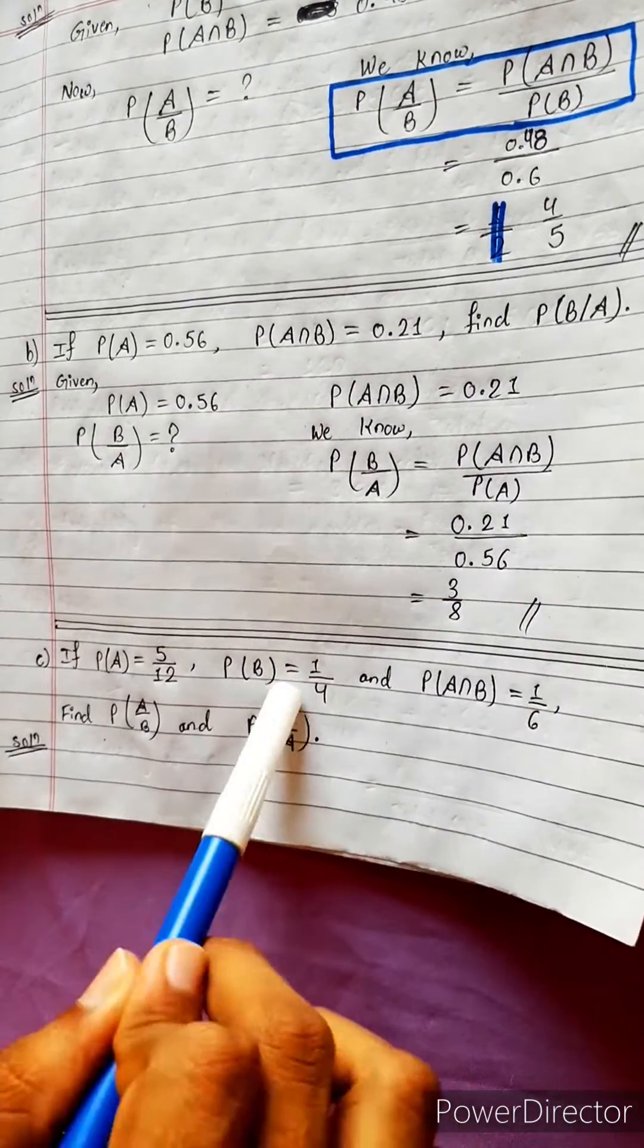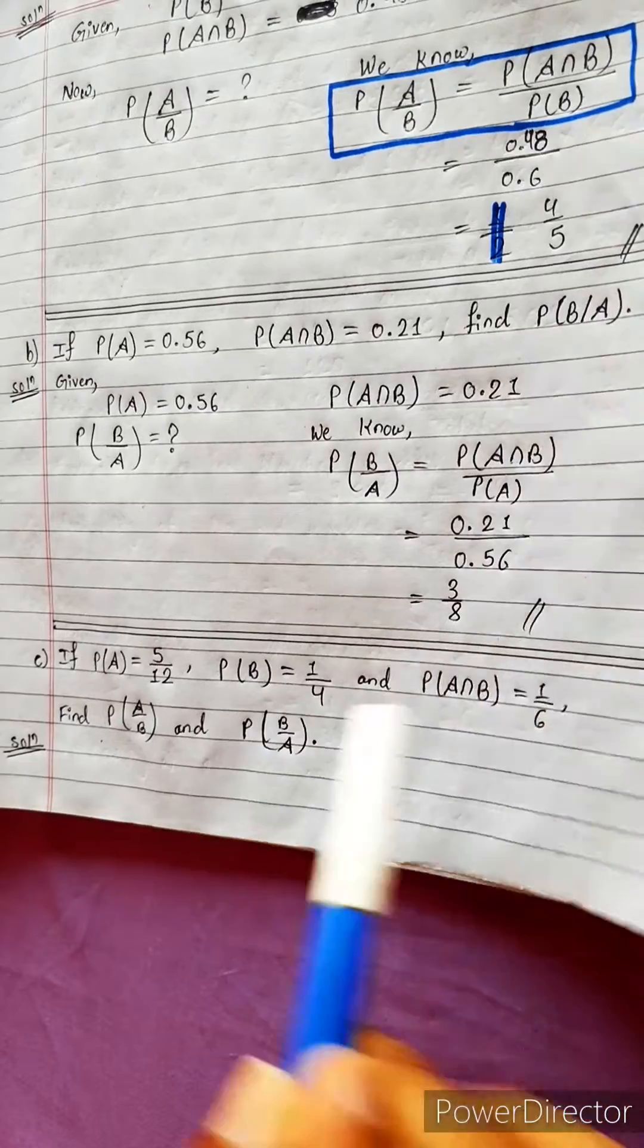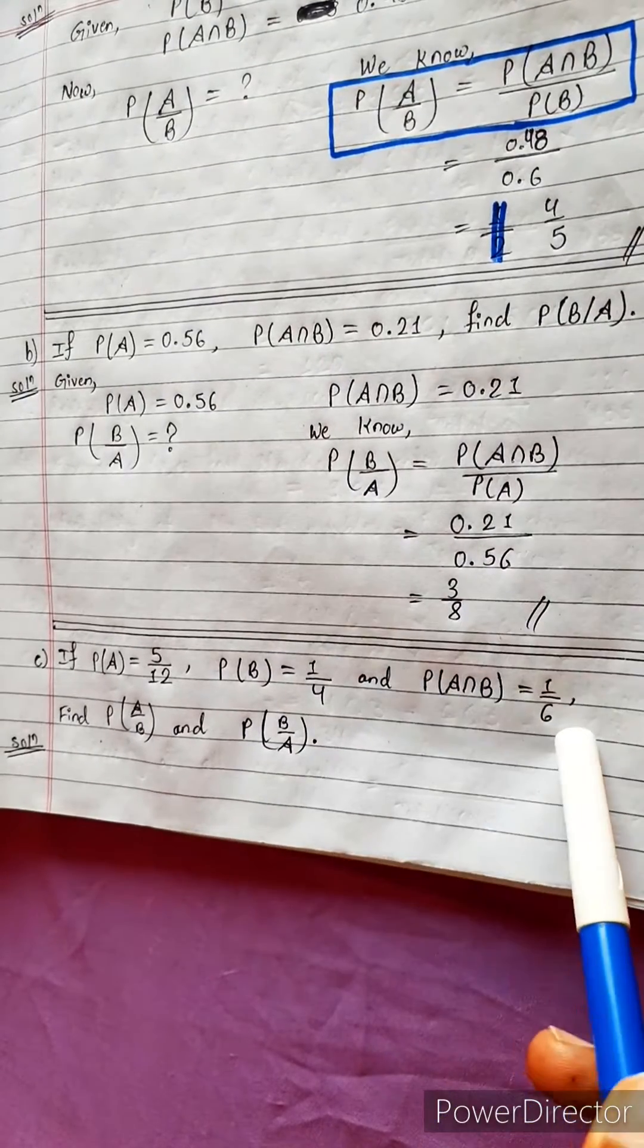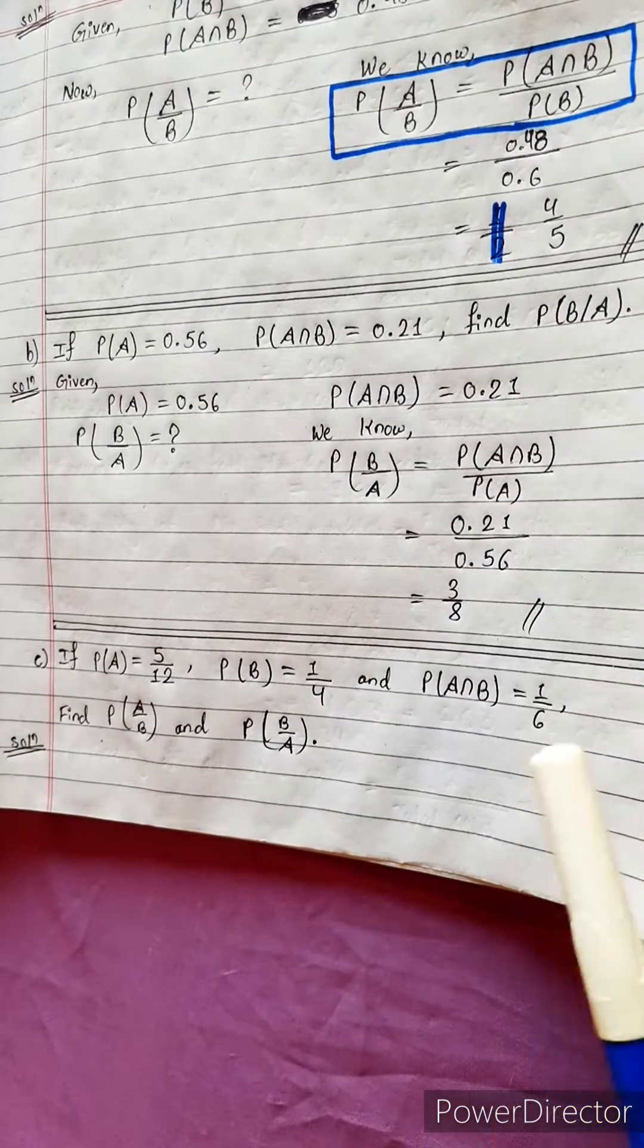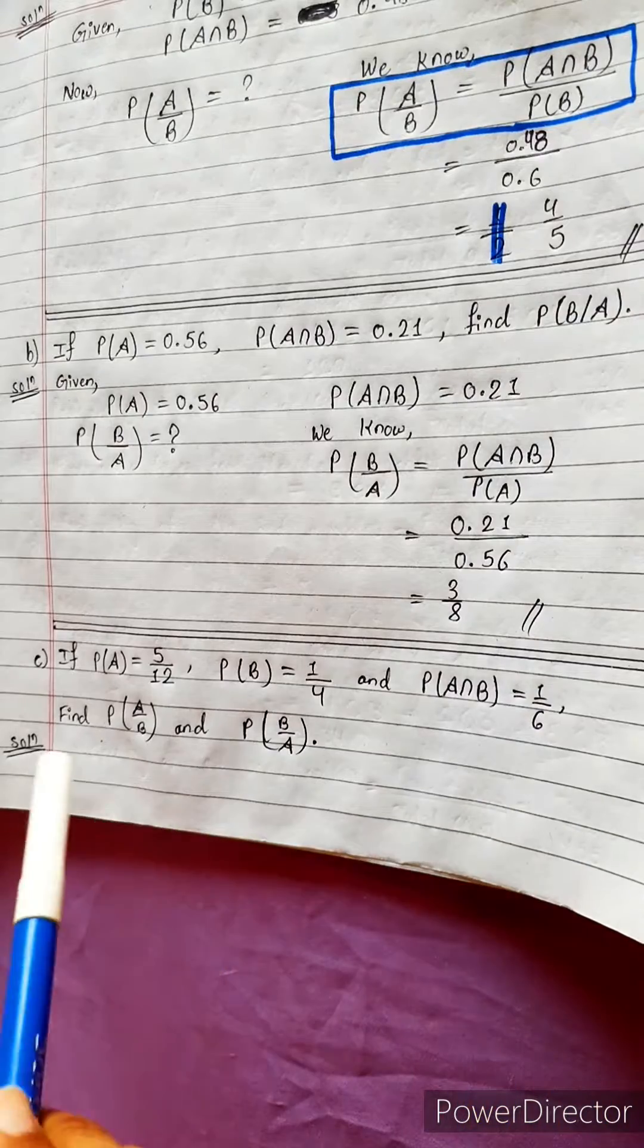If the intersection is 1 by 6, we solve this in a fraction, not in decimal like this, because the answer is also given in a fraction. So it will be easy for us.